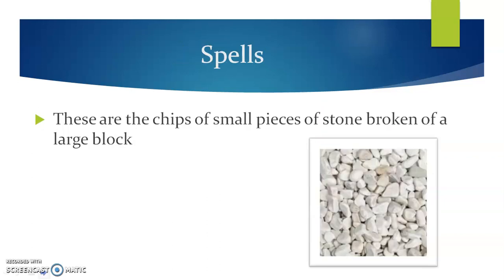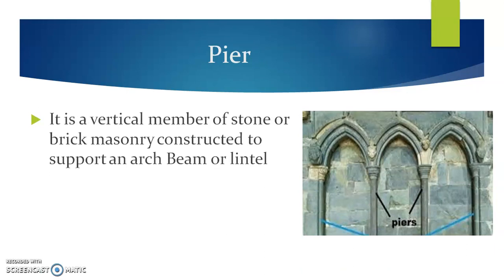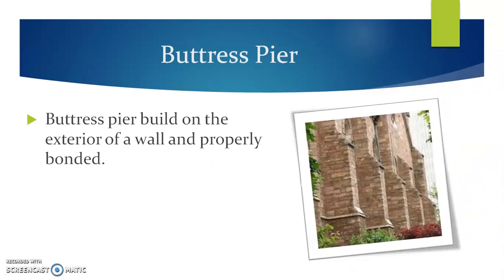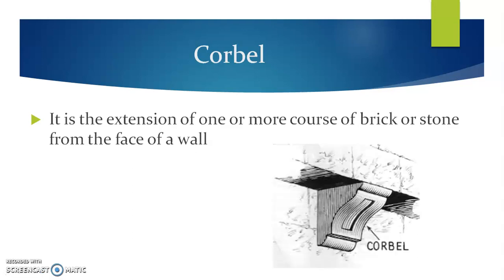Spalls. These are chips or small pieces of stones broken off a large block. Pier. It is a vertical member of stone or brick masonry constructed to support an arch, arch beam, or lintel. Buttress pier. Buttress piers are built on the exterior of a wall and are properly bonded. They are projected piers coming out of the structure, helpful for achieving good appearance, improved overall stability, and better load distribution. Corbel is an extension of one or more courses of brick or stone from the face of the wall. This figure indicates the corbel.